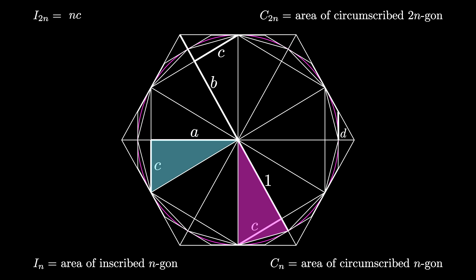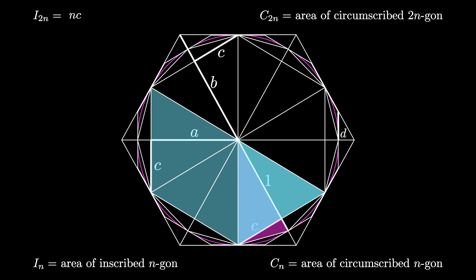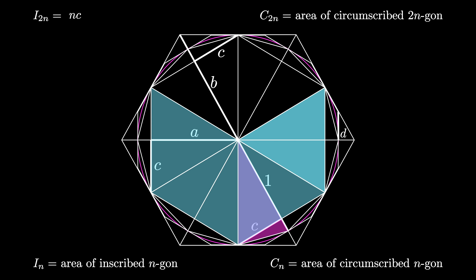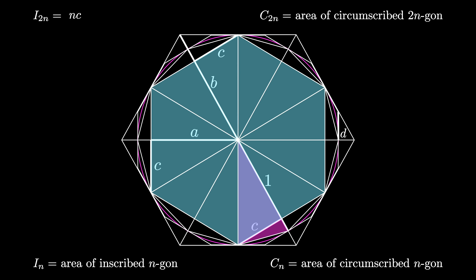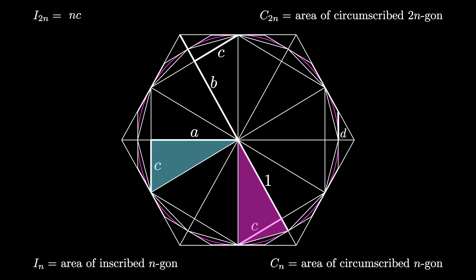The area of the inscribed n-gon can be obtained by taking this triangle and doubling it, and then rotating the result n times. The triangle has a base of length a and a height of length c, so therefore the area of the inscribed n-gon is 2n times one-half times a times c, which simplifies to n times a times c.